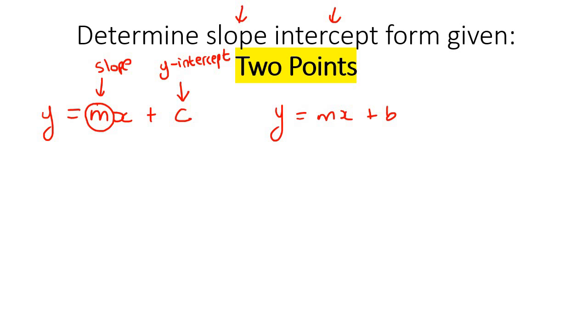Up till now, I've showed you different ways of how you can find the slope-intercept form. But now in this lesson, we're going to learn how to do it when they give you two points.